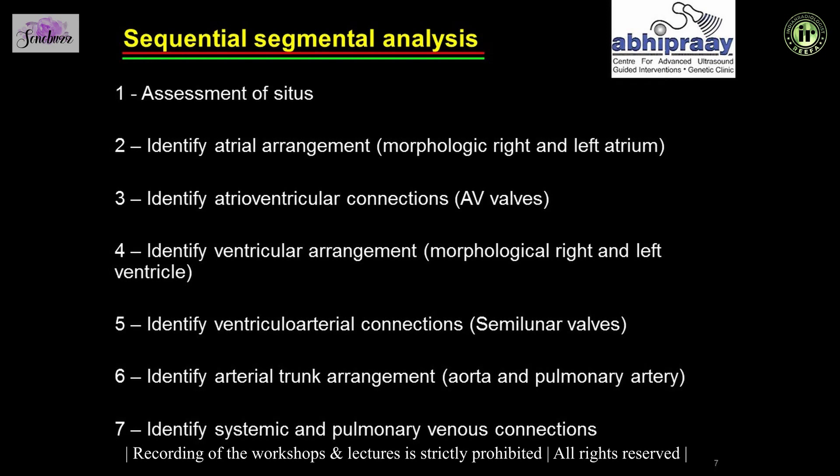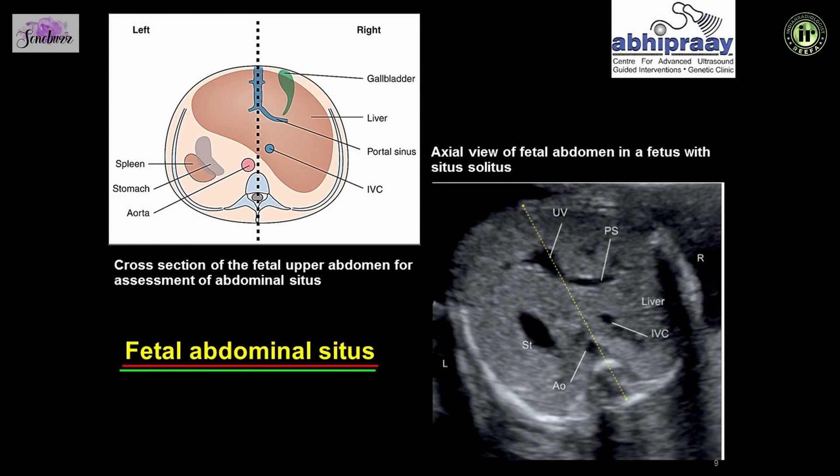It always boils down to a correct protocol and methodology, and therefore we need a sequential segmental analysis where we assess situs, identify arterial arrangements, AV valves, ventricular arrangements, ventricular arterial connections, identify the arterial trunk arrangement at the three vessel view, and the systemic and pulmonary venous connections.